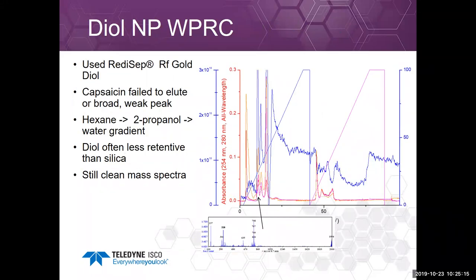Next I ran wide polarity range on the diol column using the hexane/2-propanol/water gradient. Diol is often less retentive than silica, so something that might stick on silica might come off a diol column. Also, for very nonpolar compounds, you might actually get better retention on diol compared to silica because a very nonpolar compound might not adsorb strongly onto very polar silica, but diol is somewhat less polar. We still see clean mass spectra, but the active compound still isn't showing up.